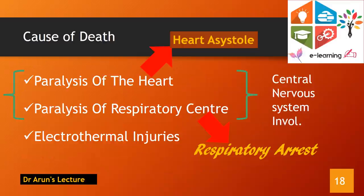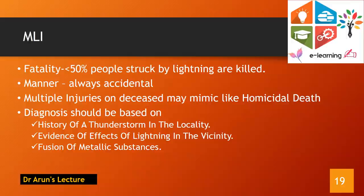Coming to the cause of death: involvement of the central nervous system can result in paralysis of the heart, or the respiratory pathway may be compromised, or electrothermal injuries caused by lightning may be the cause of death. Points of importance: 50% of people struck by lightning are dead. The manner is always accidental in nature. It may mimic a homicidal death, with a dead body recovered from an open space or highway showing features of contusion, fractures, and lacerations of internal as well as external organs, which may even mislead the case.